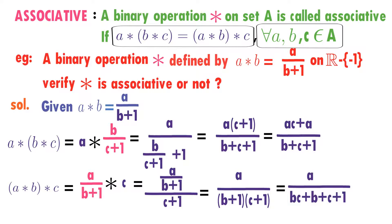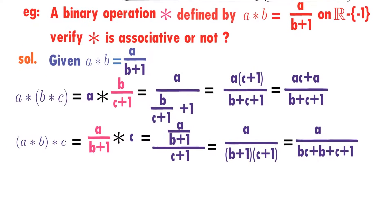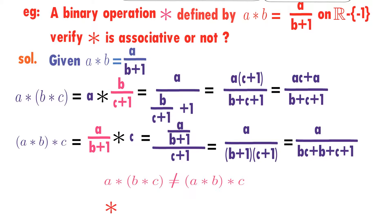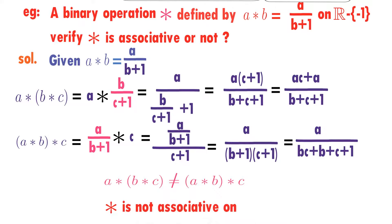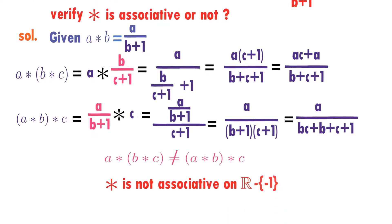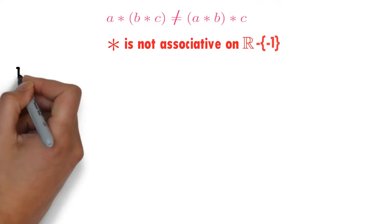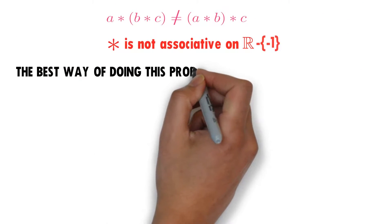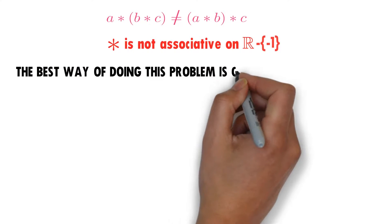Now observe A★(B★C) and (A★B)★C. Observe both — are they equal? We can easily observe here they are not equal. Therefore, star is not associative on the set of real numbers except minus 1.